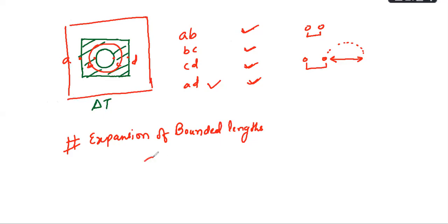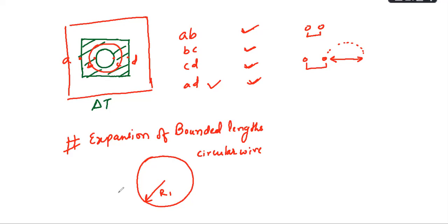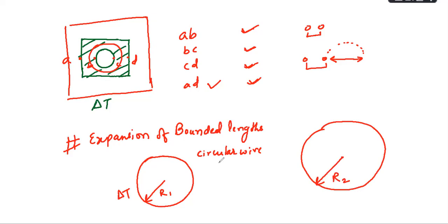If we have a ring like this — a circular wire — and this is the radius of the ring, if we heat this wire, what is going to happen to the radius? It will increase. That's the point. So this is R2, and R2 will be equal to R1 into 1 plus α·Δt.